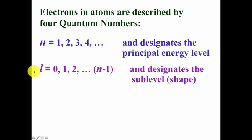The second quantum number is L. It designates the sublevel or subshell and therefore the shape of the orbitals in that subshell. And L can have values 0, 1, 2, on up through 1 less than n. So if we are at, let's say, the fourth energy level, L could be 0, or 1, or 2, or 3, which is 1 less than 4.